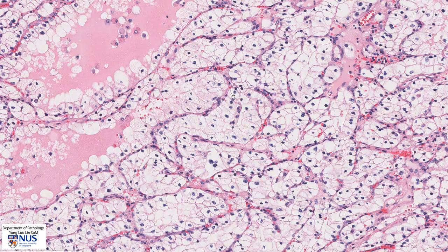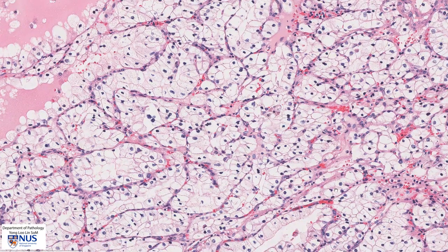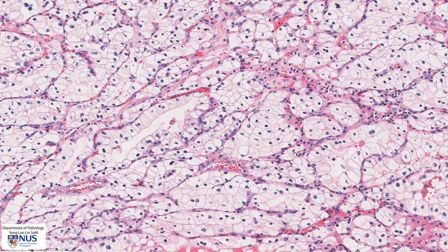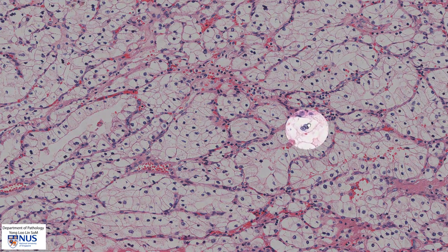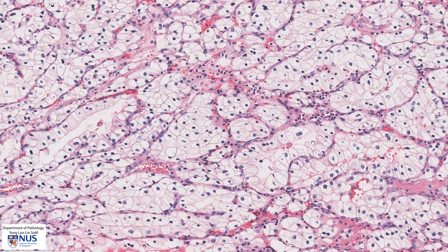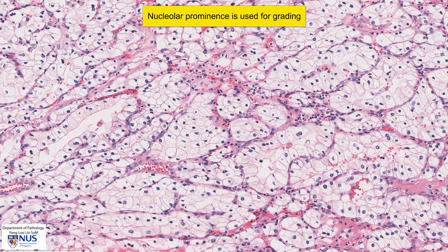Let's focus now on the nuclei of the tumor cells. We can see that they are relatively small and uniform in size; the cells have low nucleocytoplasmic ratios or low NC ratios. And over here, some of the cells contain quite distinct nucleoli. Noticing the nucleoli is important because this is part of the grading process of renal cell carcinoma — specifically, how clearly can we see the nucleoli at certain magnifications.